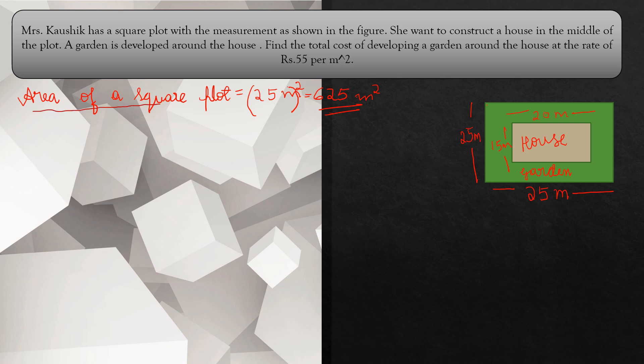Solution: Area of a square plot is equal to 25 meters whole square. Why 25 meters whole square? Because we are finding the area of the square garden, and one side is 25 meters as given in the diagram. So 25 into 25 is 625 meter square.